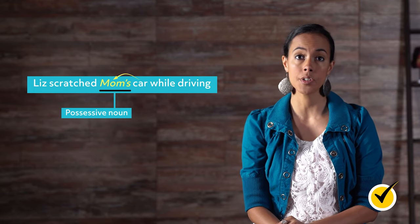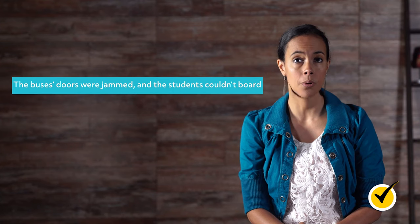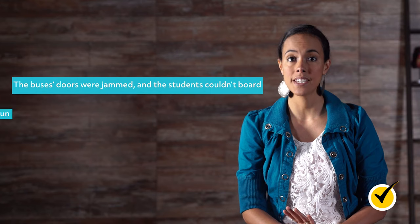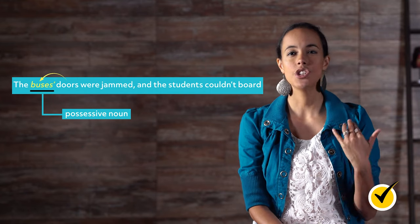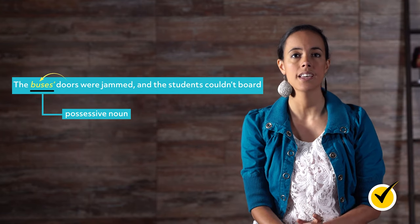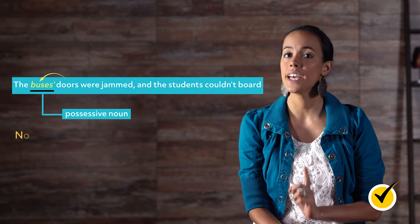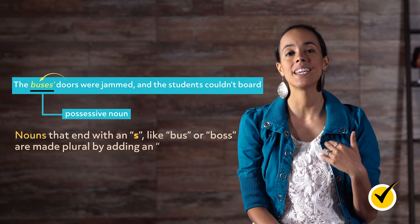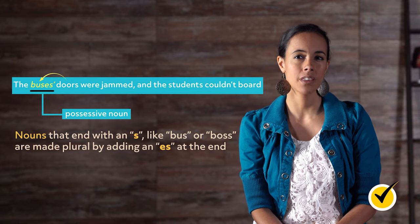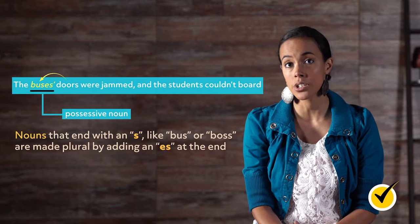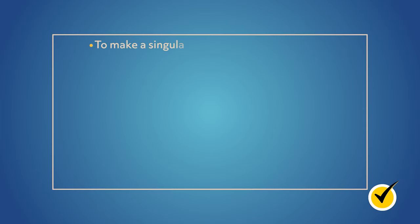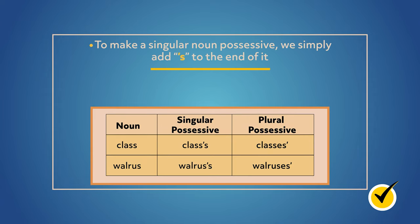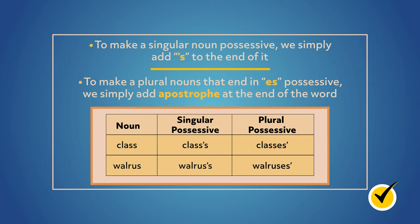Nouns that don't refer to humans or animals can also be possessive. Can you spot the possessive noun? The buses' doors were jammed and the students couldn't board. The possessive noun is buses because the doors belong to the bus. Notice the placement of the apostrophe — buses is plural and ends with S. To make a singular noun possessive, we add apostrophe S to the end even if it already ends in S. When dealing with plural nouns that end in ES, we make the noun possessive by adding the apostrophe at the end of the word.